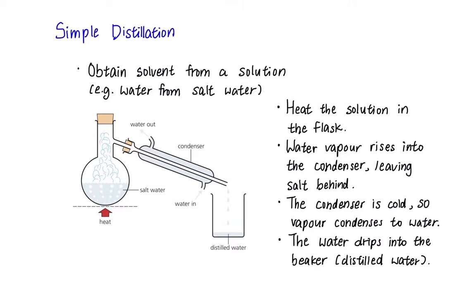For simple distillation, this method is used to obtain solvent from a solution, for example, water from salt water. First, put salt water in the flask and heat the solution so that it evaporates the water. When water vapor is formed, it will travel to the condenser and turn to water as the condenser is kept cold. Then the water will drip into the beaker as distilled water without salt.